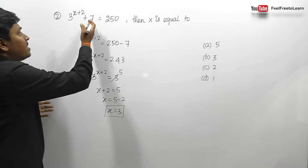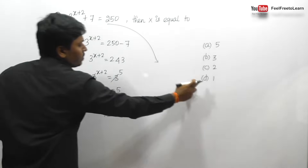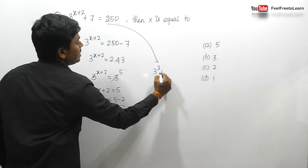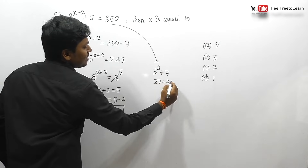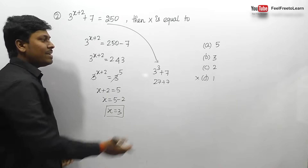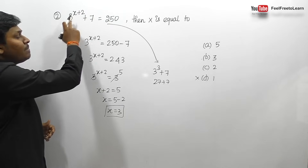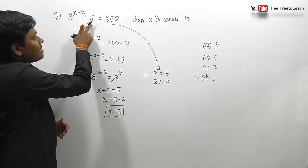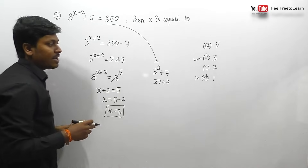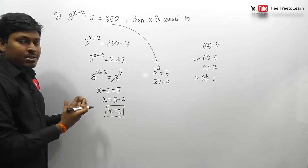We can also solve by substituting option values. Trying option D (x=1): 3^3 plus 7 equals 27 plus 7, which is not equal to 250 — eliminated. Trying option B (x=3): 3^5 plus 7 equals 243 plus 7 equals 250, so LHS equals RHS. Option B (x=3) is confirmed. Always try the conventional method, and apply shortcuts in exams.